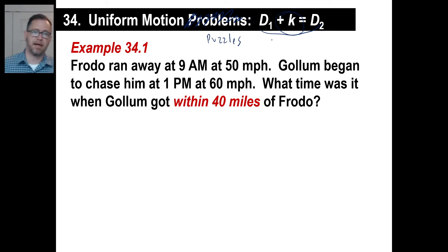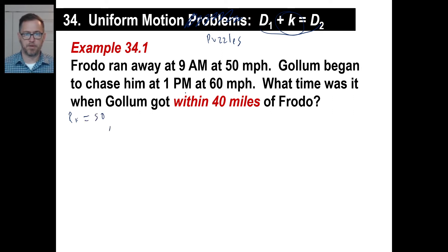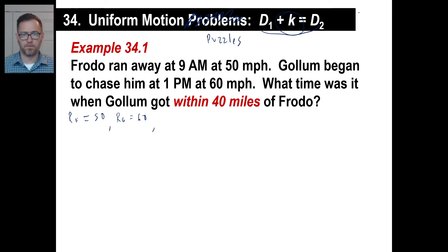Frodo ran away at 9 a.m. at 50 miles an hour. So the rate of Frodo is 50. Gollum began to chase him at 1 p.m. at 60 miles an hour. So the rate of Gollum is 60. What time was it when Gollum got within 40 miles of Frodo?